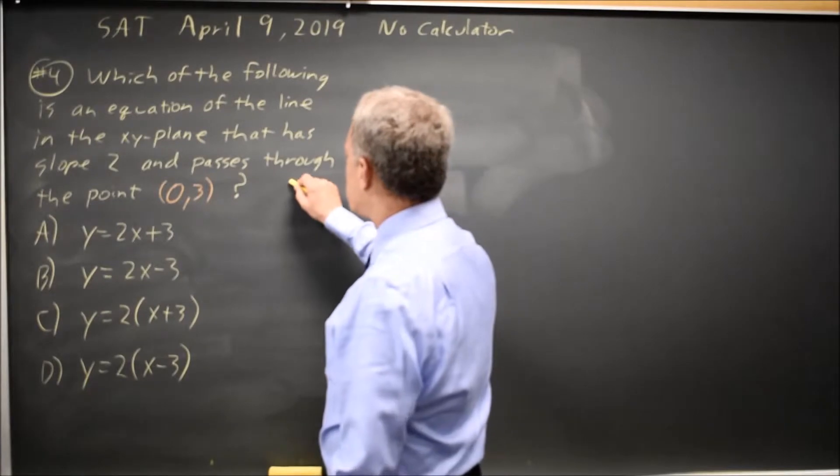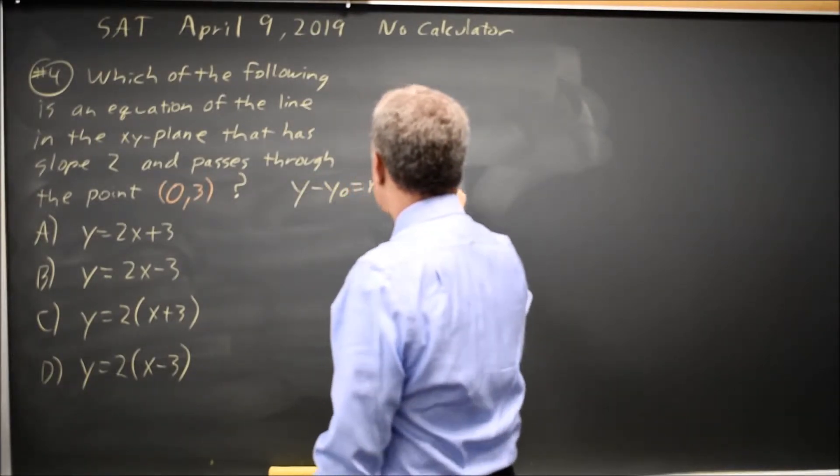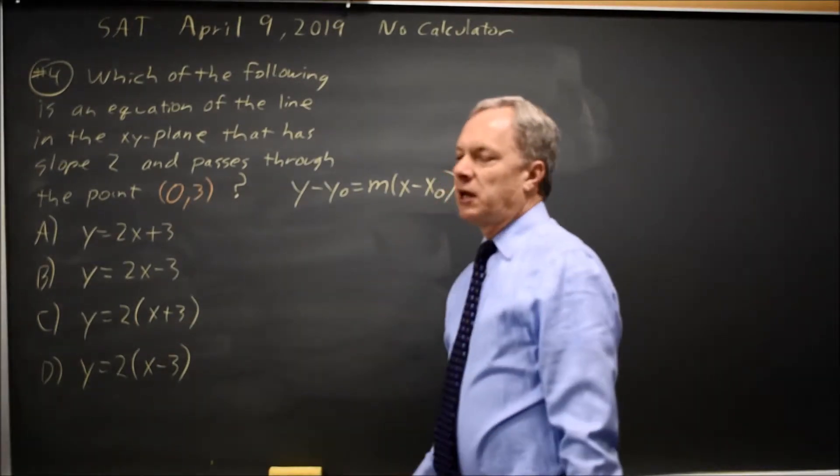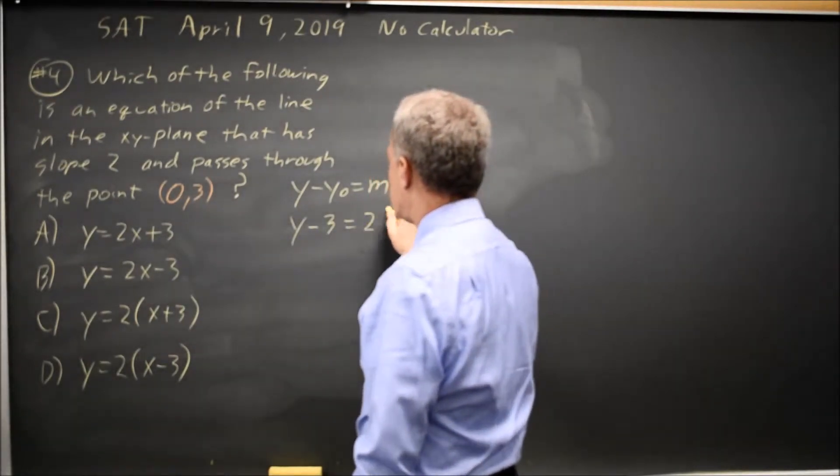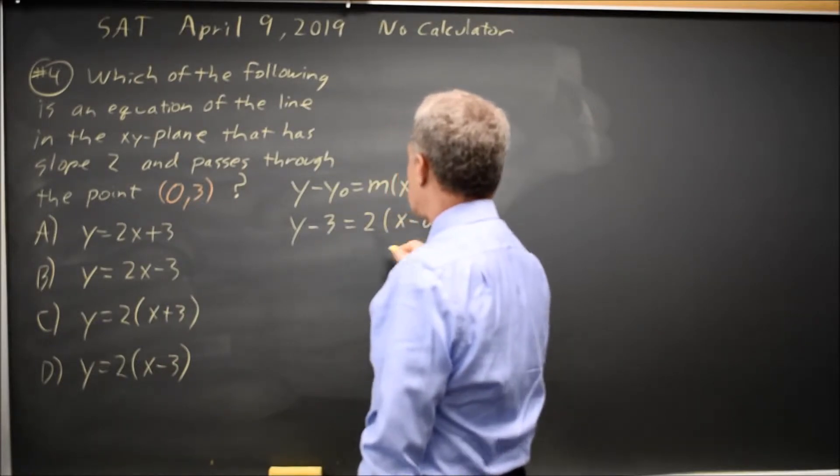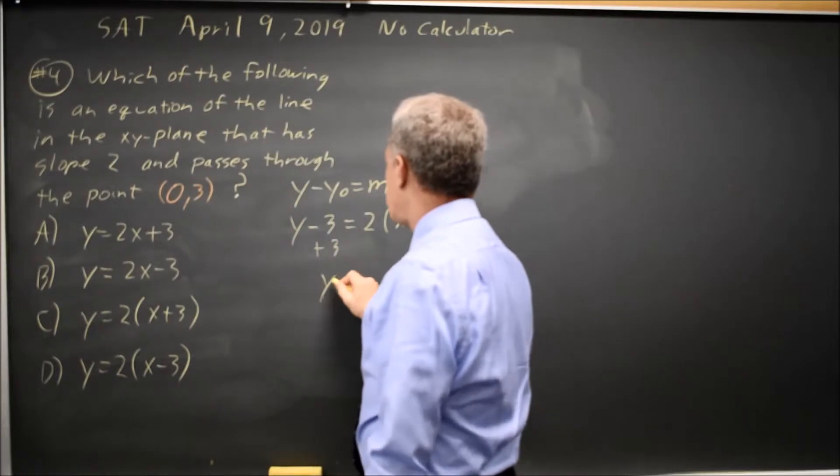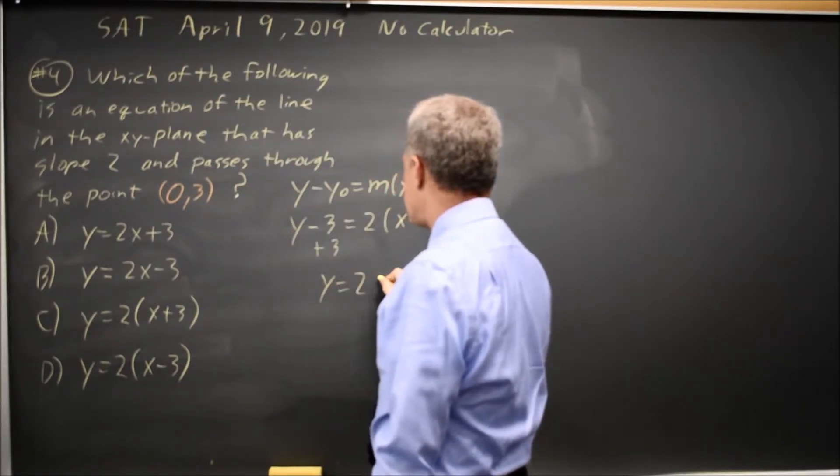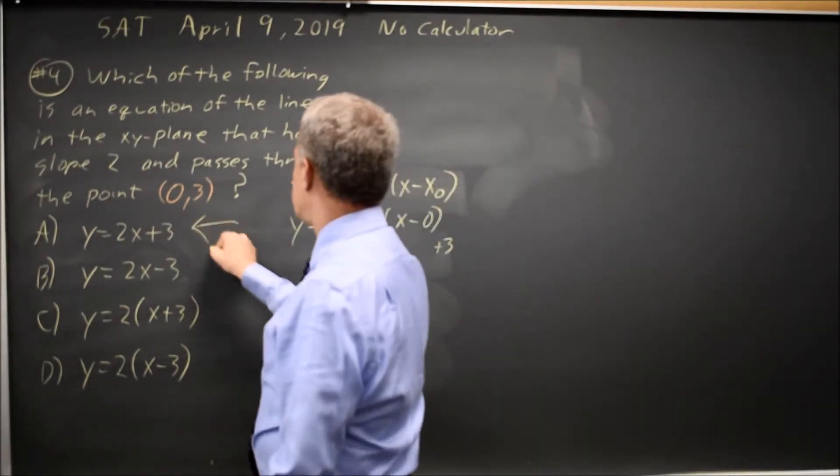You can write that using the familiar form y minus your y-coordinate equals your slope times x minus your x-coordinate. And we're given that the y-coordinate is 3 and the slope is 2. So that simplifies if you add 3 to both sides to y equals twice x minus 0, which is twice x plus 3, choice A.